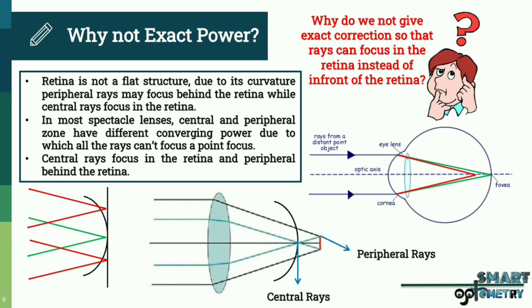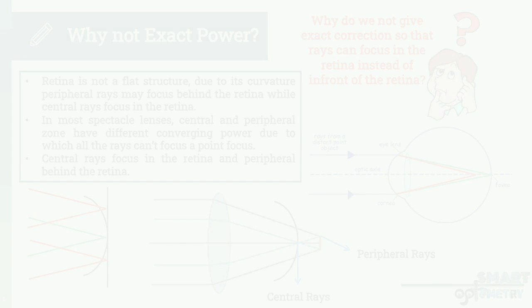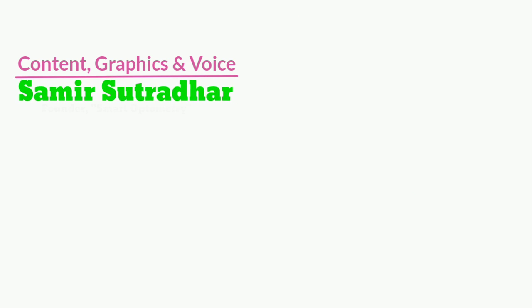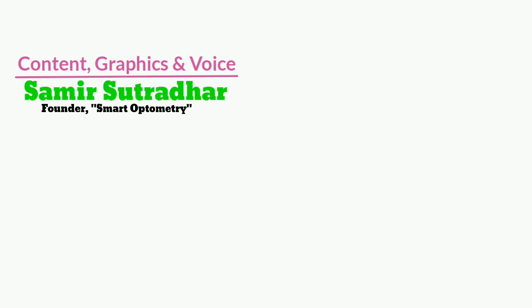Hope it's clear why we give overcorrection in hypermetropia and undercorrection in myopia. Stay with Smart Optometry and study optometry smartly.